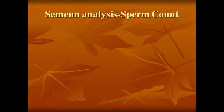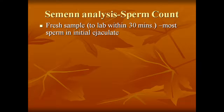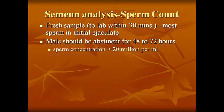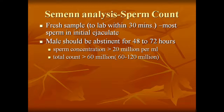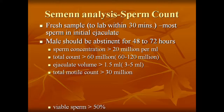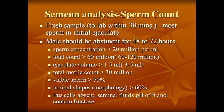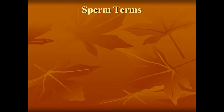Semen analysis or sperm count: the fresh sample should reach the lab within 30 minutes of ejaculation. The male should be abstinent for 48 to 72 hours. Sperm concentration should be more than 20 million per ml; total count more than 60 million (around 60 to 120 million). Ejaculate volume should be more than 1.5 ml. Total motility count more than 30 million. Viable sperm should be more than 50 percent. Normal morphology should be more than 60 percent. Semen pH is 8. Normal ejaculate is termed normospermia.